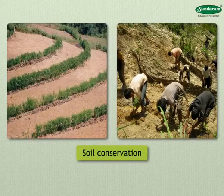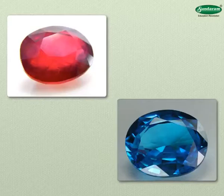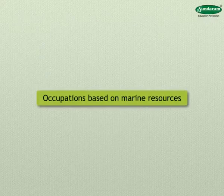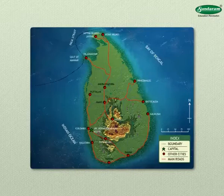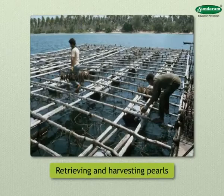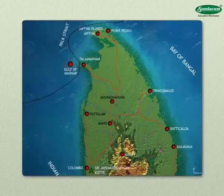There are mines of precious stones like ruby and topaz. Mines of mica, tungsten, and graphite are also found here. Sri Lanka is surrounded by sea on all sides, so fishing is carried on on a large scale. There are salt pans on the northeastern coast, and retrieving and harvesting pearls from pearl oysters is an occupation near the Gulf of Manar.